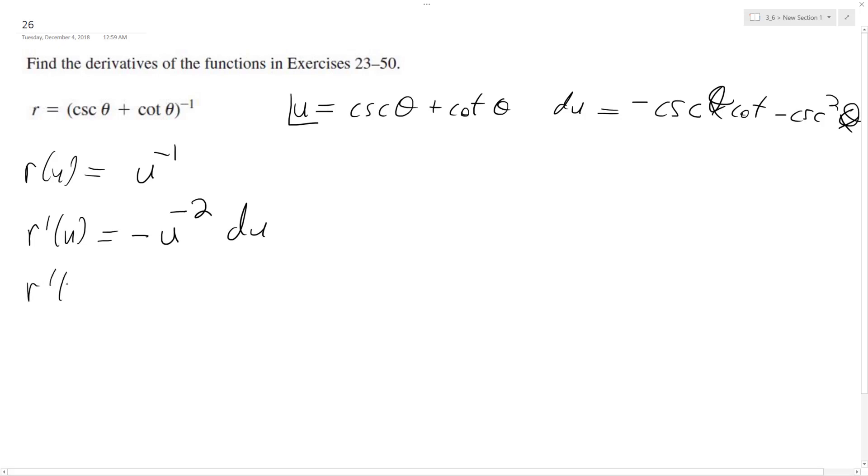Alright, so we can substitute back in now. We get negative times (cosecant theta plus cotangent theta) to the negative 2, times du, which is negative cosecant theta cotangent theta minus cosecant squared theta.